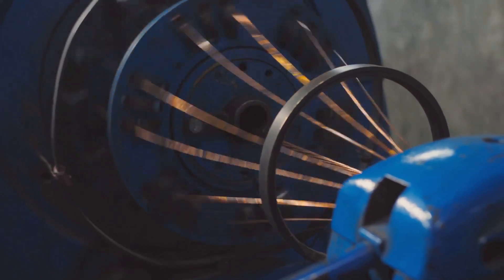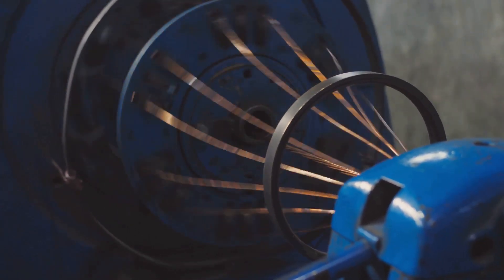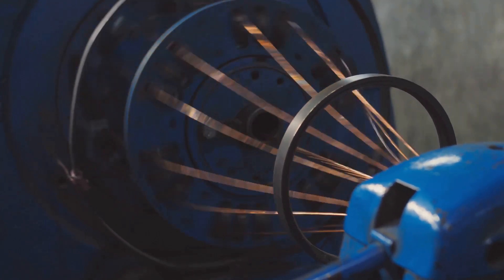As the loop spins, the commutator flips the direction of the electricity flowing through it, ensuring continuous rotation. This flipping action switches the loop's north and south poles, causing it to keep spinning without stopping.